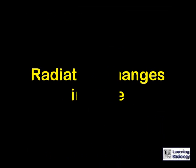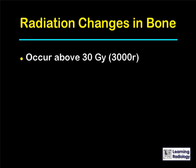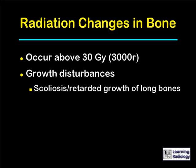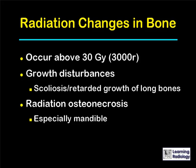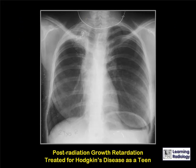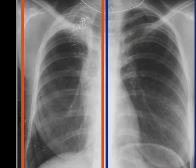Radiation changes in bone usually require at least 30 gray or 3,000 rads. In growing bone, growth disturbances can be seen in the form of scoliosis in the spine or retarded growth of long bones. Radiation osteonecrosis is a form of avascular osteonecrosis produced by radiation, especially common in the mandible. Rarely, radiation can induce a bone tumor years after delivery. This young female who received radiation to her entire right hemithorax for Hodgkin's disease shows a slightly smaller right hemithorax, a smaller right breast, and radiation changes with fibrosis in the right hilum and apex.